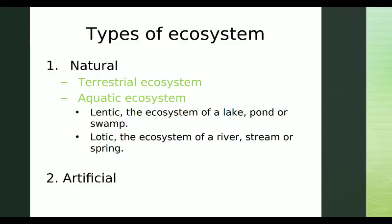The types of ecosystems are: Natural and Artificial. Natural ecosystems include Terrestrial and Aquatic. There is also the Artificial Ecosystem.